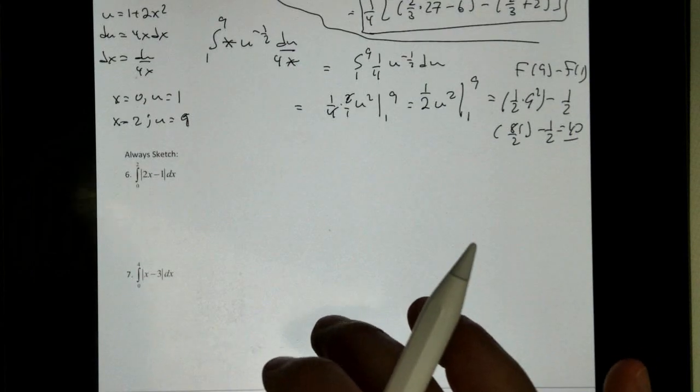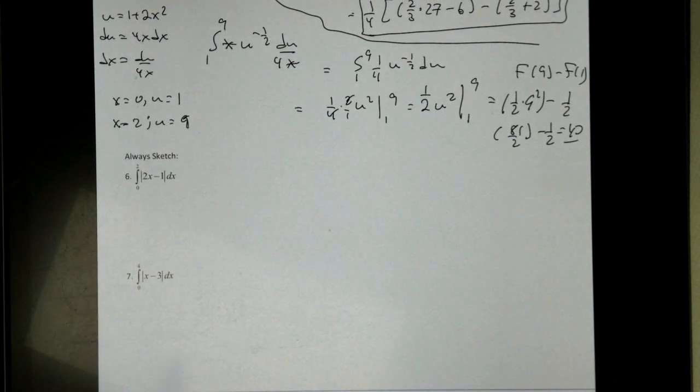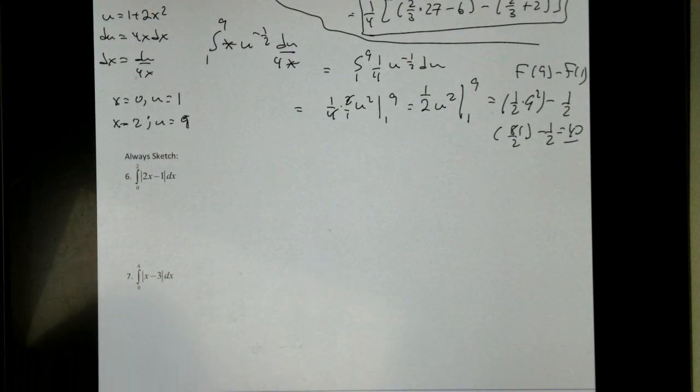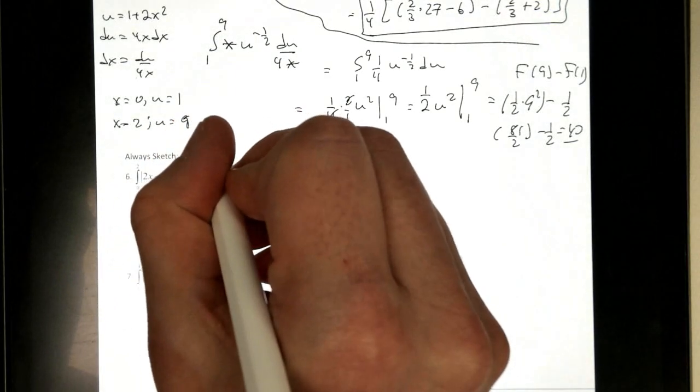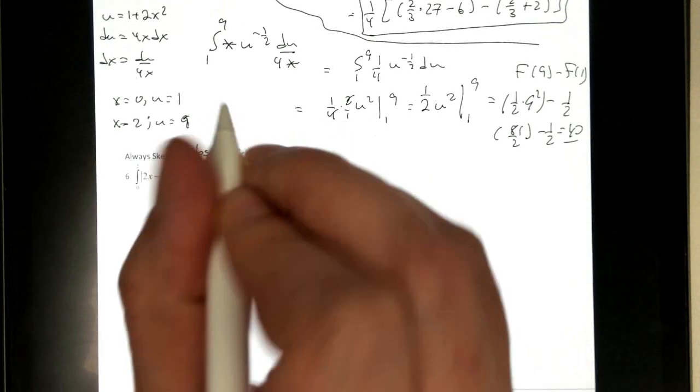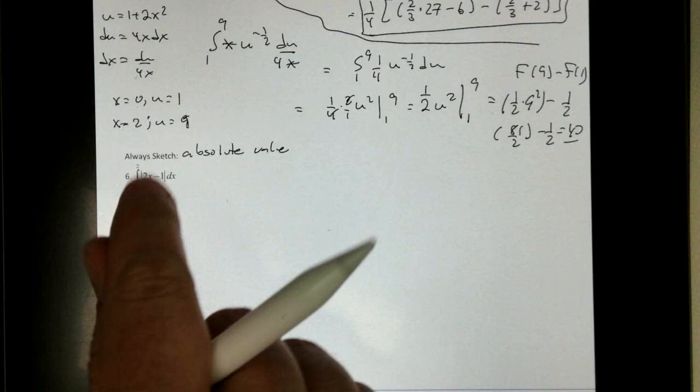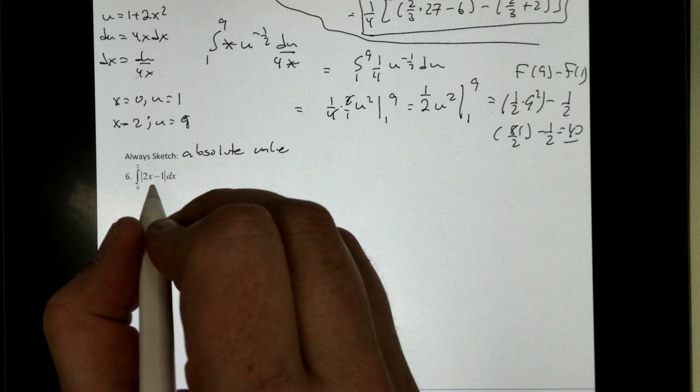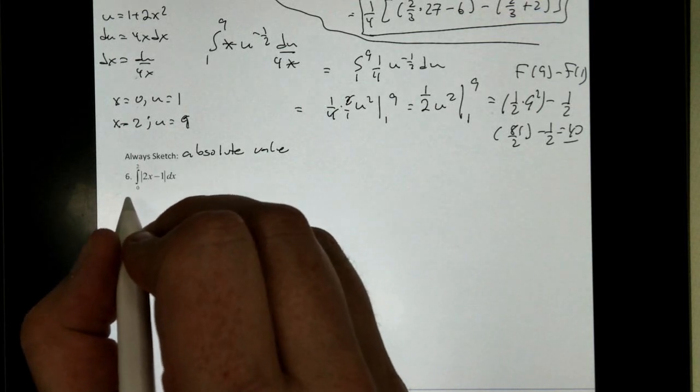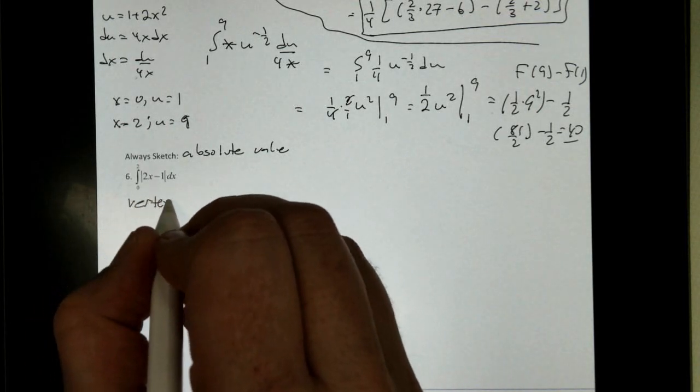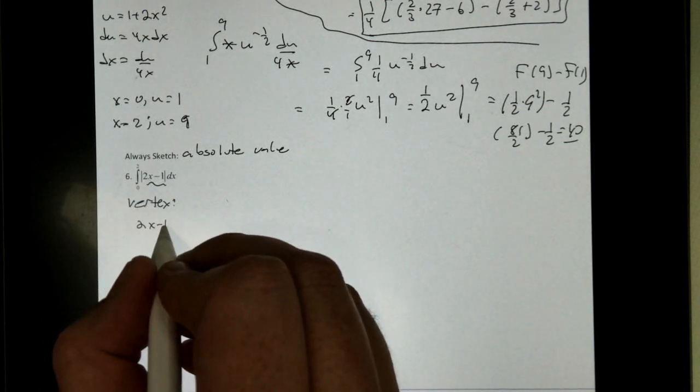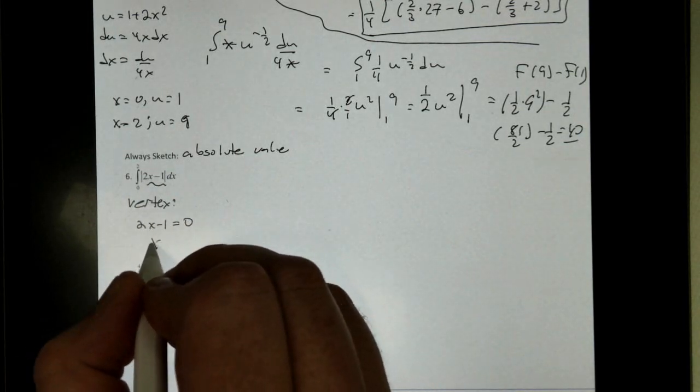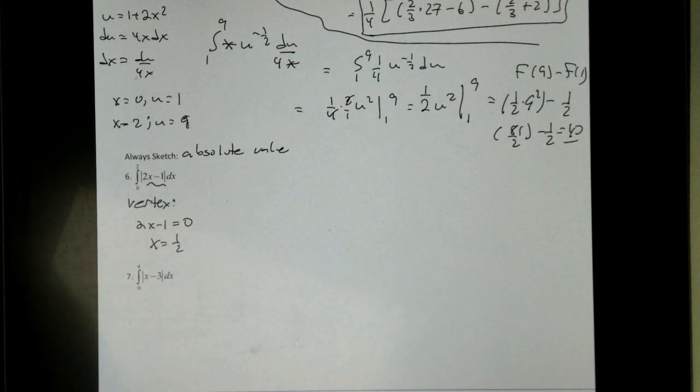However, there are some that we don't want to ever integrate. We talked about this in yesterday's video. We always sketch absolute value. We talked about this one yesterday. So let's kind of see this again. This is my absolute value graph. I know it makes my V, my checkmark, but I need to find the vertex. To get the vertex, you just set your interior equation to 0, and that's going to give me 1 half.